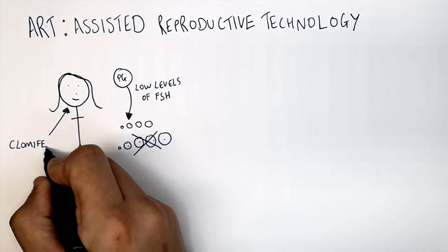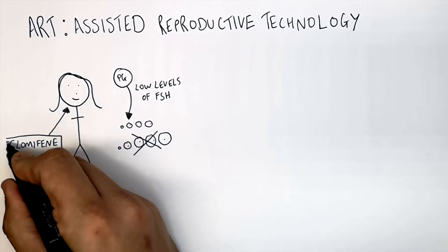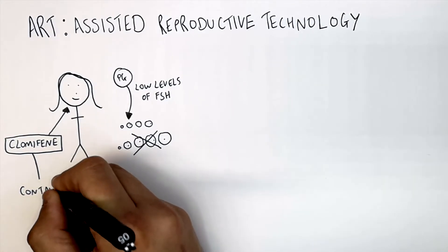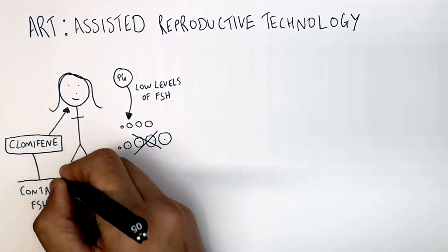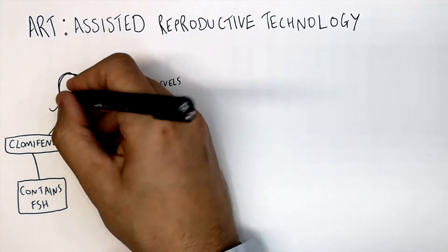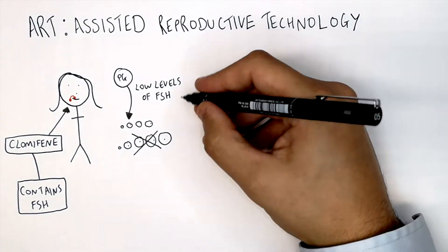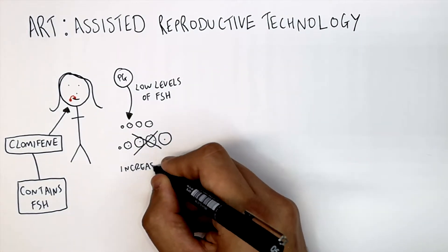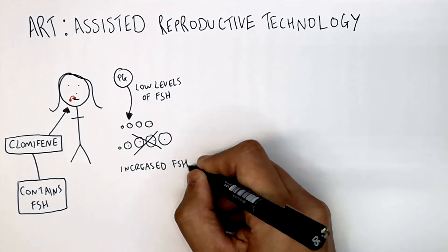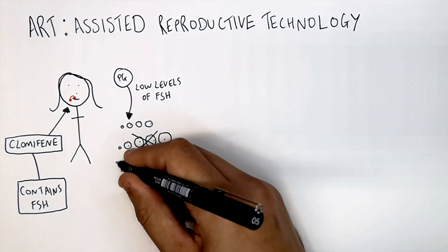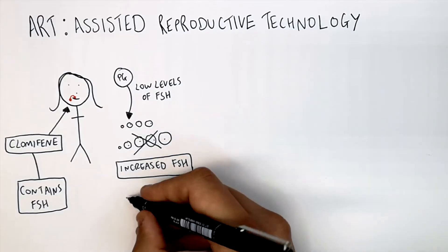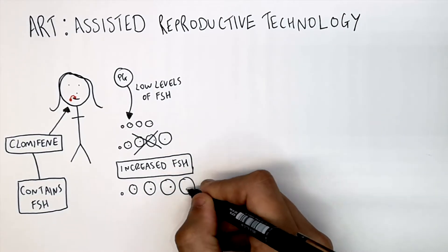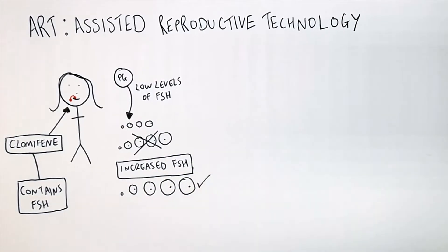Clomiphene is a drug that contains FSH. If she takes clomiphene, this will cause increased FSH levels in her blood, causing her egg follicles to grow and mature in her ovaries.